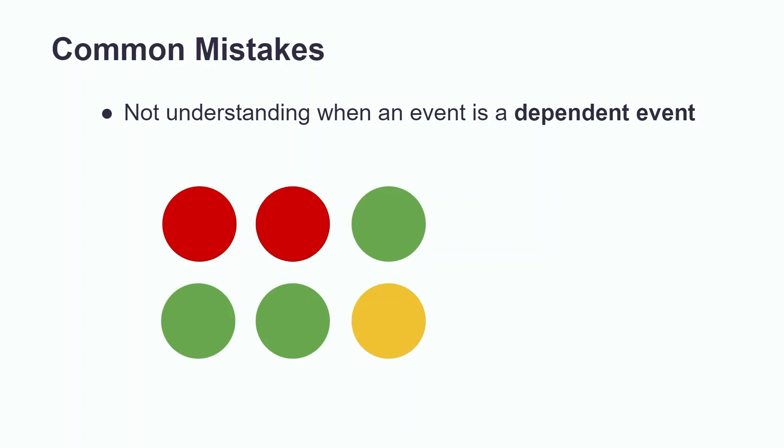For example, let's say that we have a bag of 2 red balls, 3 green balls, and 1 yellow ball, and we want to know the probability of selecting the yellow ball if we are given 2 chances to pick a ball. For our first pick, we have 1 yellow ball and a total of 6 balls.